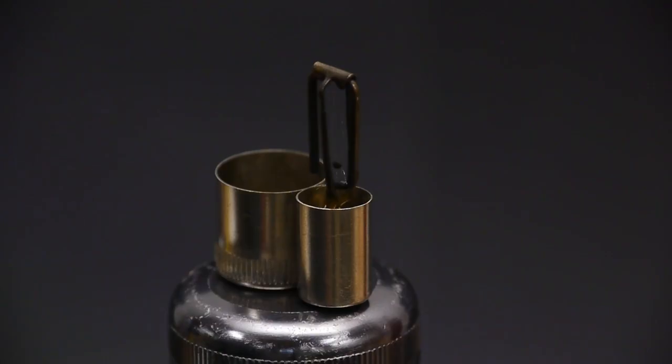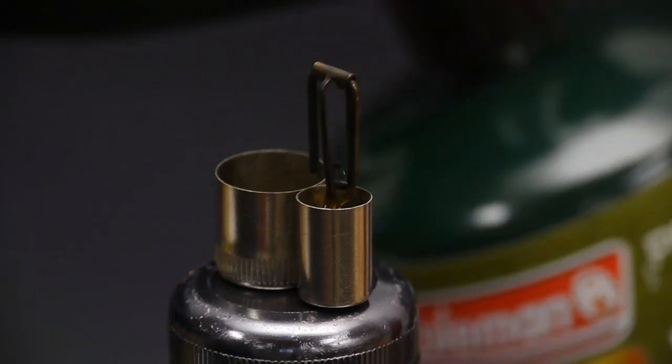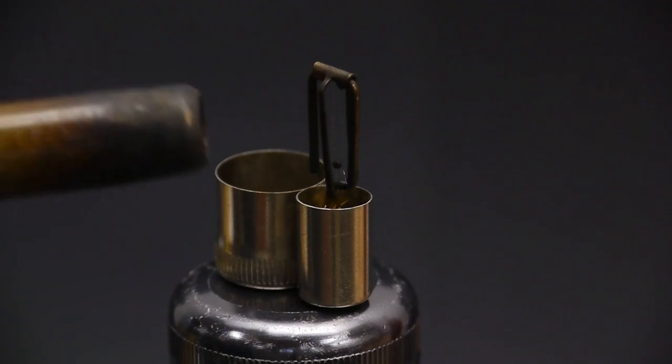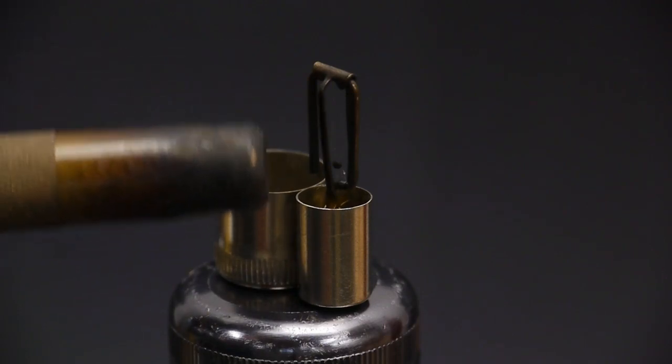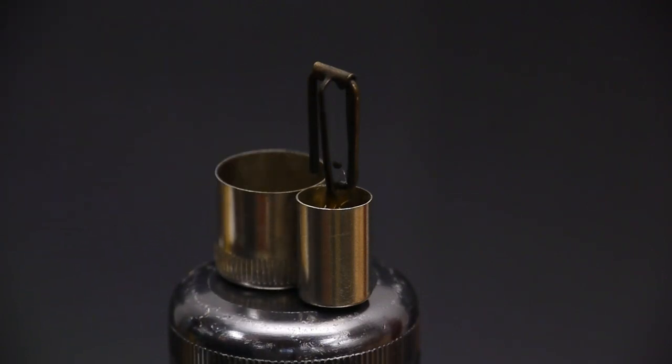Even though the platinum is very good at catalyzing the breakdown of methanol, it doesn't work on every flammable vapor. Let's try propane from a standard torch like this. As you can see, there's really not much reaction, and it's not lighting the torch.